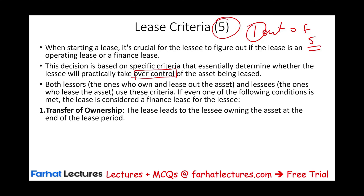The first criteria is transfer of ownership. Does the lease lead to the lessee owning the asset at the end of the lease period? If the contract states that at the end of the lease the ownership of the asset — building, vehicle, equipment — transfers to the lessee, then we have a finance lease. This is easy to determine because the information is found in the lease itself.